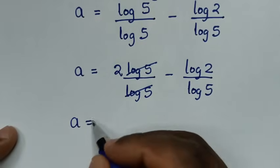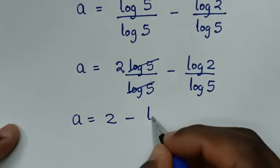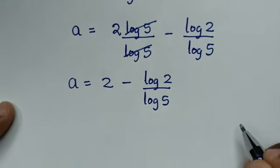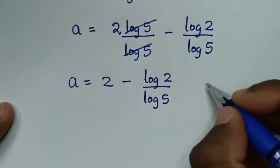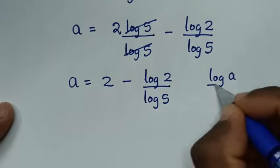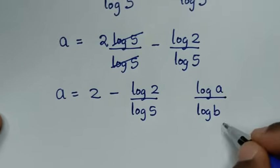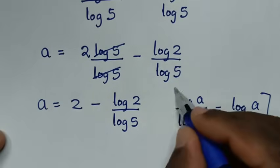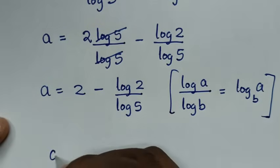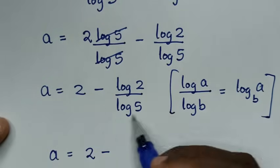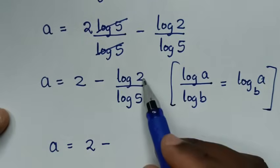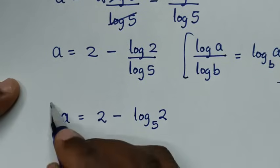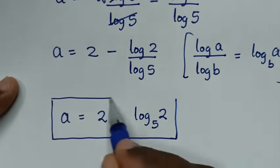So a is equal to 2 minus log of 2 over log of 5. This part is in the form of log a over log b, which equals log of a base b. So the final answer is a equals 2 minus log of 2 base 5.